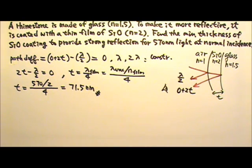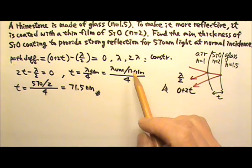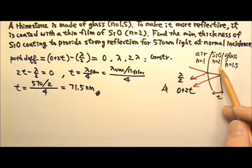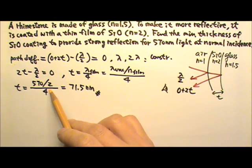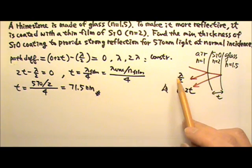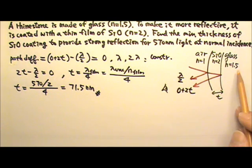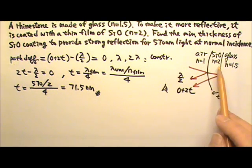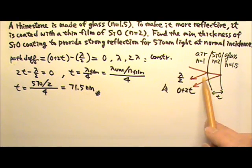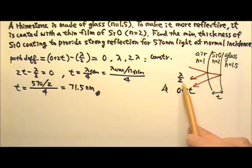Notice that the only index of refraction we plug into our calculations is the n of the thin film, n equals 2 right over here. We did not need to plug in the n equals 1 nor the n equals 1.5. However, we did need to use all of the n to compare and to decide whether each reflection involves a half-wavelength shift or not.